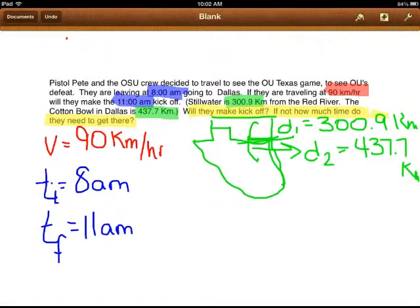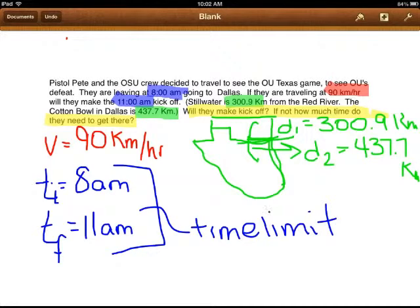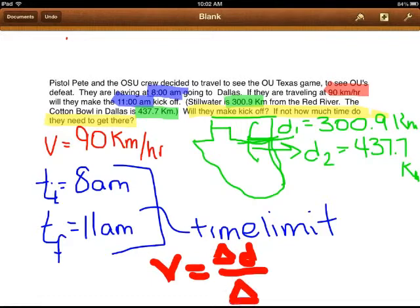They want to know, will they make kickoff? Do we really need distances now? No. Distance is too much information. We need to know how far they will be able to drive in their time limits. The time limit is our deciding factor. And what equation do we need? We need one specific equation that has velocity, distance, and time. We know velocity is equal to the change in distance divided by the change in time.